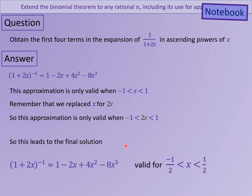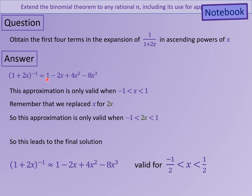To show you what I mean, grab your calculators and try typing in 1 over 1 plus 2x, replacing x with something like 3. You'd get 1 over 1 plus 6, which is a seventh. But if you type 1 minus 2 times 3 plus 4 times 3 squared minus 8 times 3 cubed into the other side, you'll notice the two answers are nowhere near each other — they totally diverge. That's because this approximation tool does not work if your x value is bigger than the two limits.